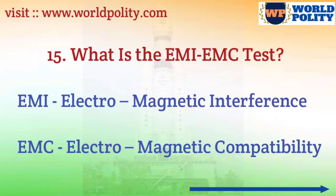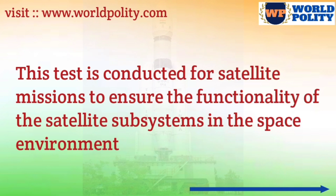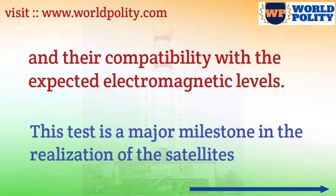Question number 15: what is the EMI/EMC test? The full form of EMI is Electro-Magnetic Interference, and the full form of EMC is Electro-Magnetic Compatibility. This test is mainly conducted for satellite missions to ensure the functionality of the satellite subsystems in the space environment and their compatibility with the expected electromagnetic levels. This test is a major milestone in the realization of the satellites.